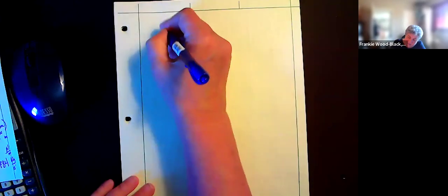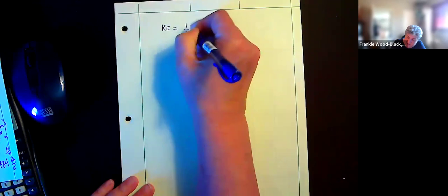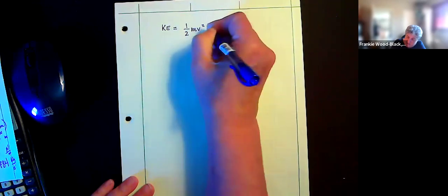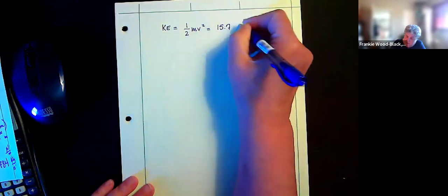And finally, we can do the kinetic energy. And my kinetic energy is going to leave me my one-half mv squared is equal to my 15.7 joules.